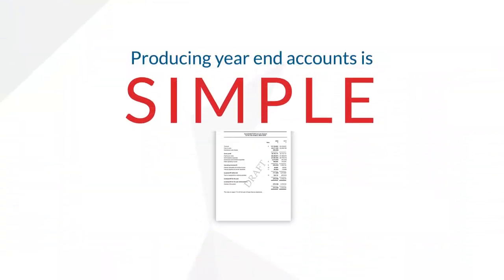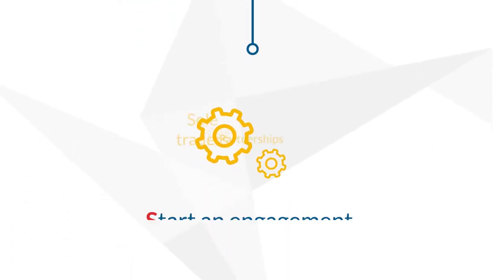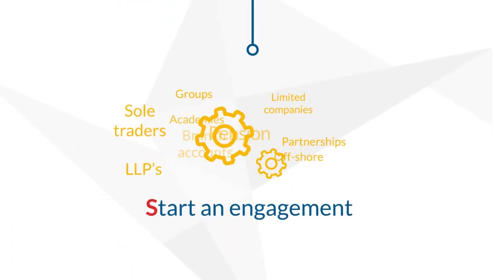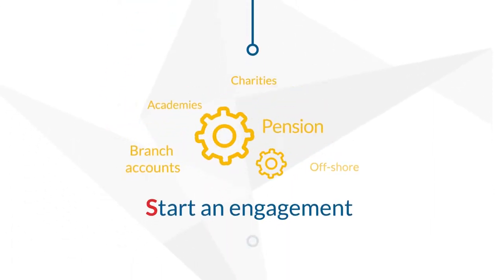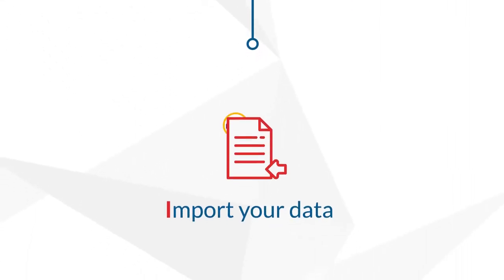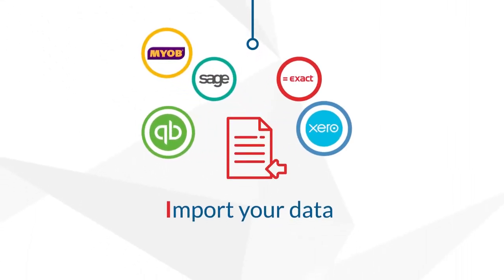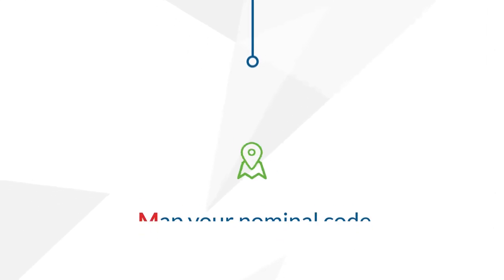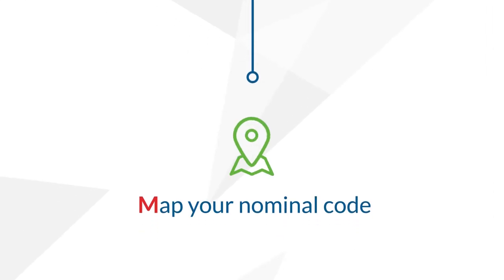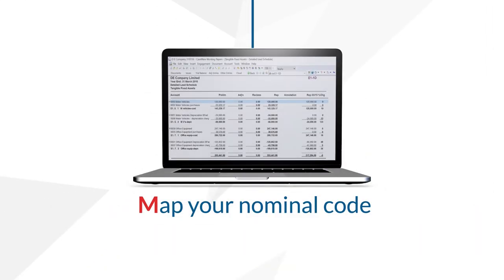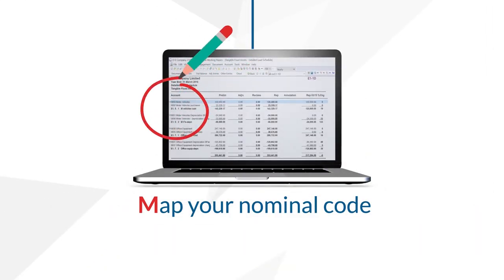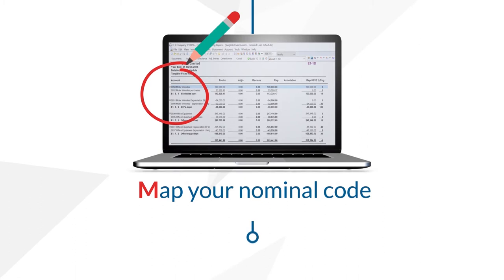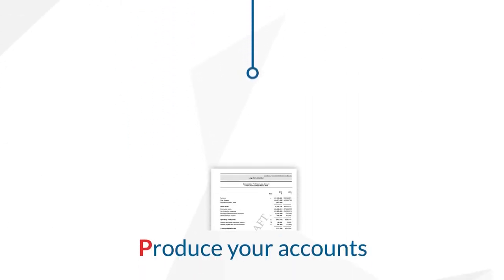Producing year-end accounts is simple. Start an engagement from any of these entity types. Import your data straight from your general ledger. Map your nominal code structure to Caseware. Produce your accounts.